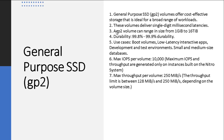GP2 durability is 99.8% to 99.9%. Use cases include boot volumes, low-latency interactive apps, development and testing environments, and small and medium-sized databases. Maximum IOPS per volume is 10,000, but maximum IOPS and throughput are guaranteed only on instances built on Nitro systems — so we need to understand what the Nitro system is.